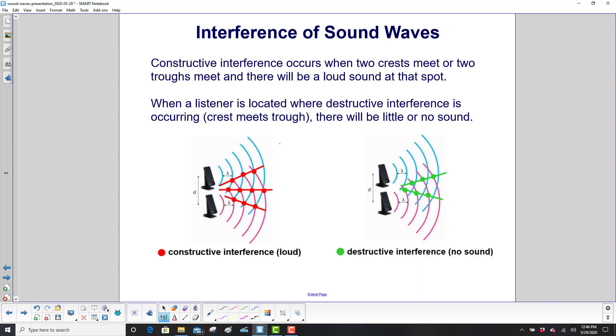So we've got two pictures here. Here's where you have the constructive interference, the red dots. The green dots here show where you have a maxima hitting a minima, so they cancel out, and you will hear no sound there.